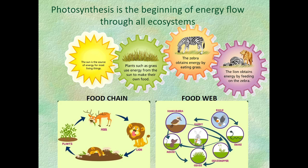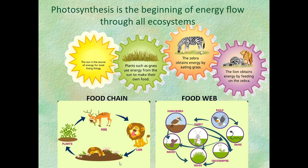A zebra gets its energy directly from grass; the grass gets its energy directly from the Sun. Then a lion eats the zebra and gets that energy — though most of it goes to decomposers. All the energy a lion ever uses ultimately came from the Sun, through a producer, then a first-level consumer. Everything decomposes — there should be arrows from every organism to decomposers, because soil is decomposing plant and animal matter. Importantly, this is a nutrient cycle — matter gets recycled — but energy flows in one direction and is not recycled.